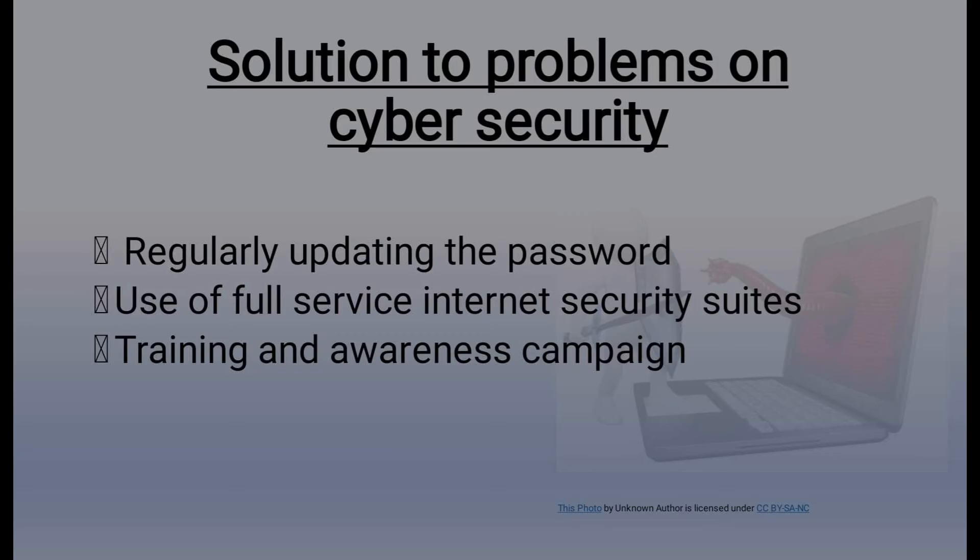Number two: use a full-service internet security suite. For security problems like ransomware, viruses, and malware, we use a full-service internet security suite. Some of the best internet security software are Bitdefender, Norton 360, Trend Micro Maximum Security, Avast Ultimate, Webroot Internet Security Plus, and so on. These security suites provide real-time protection against existing and emerging malware including ransomware and viruses, and also protect private and financial information when we go online.